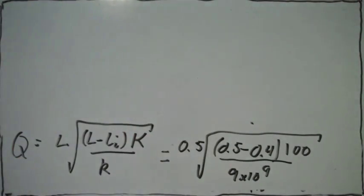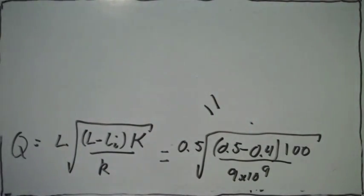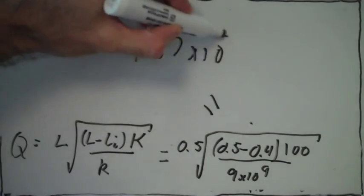Now it's a matter of multiplying these numbers out. We get the value of q, which is the charge on each block.